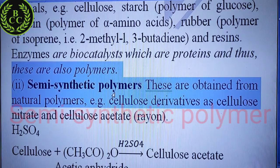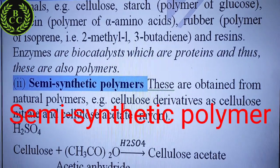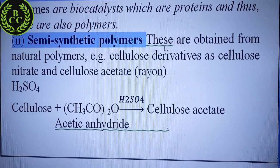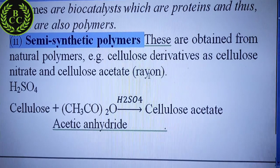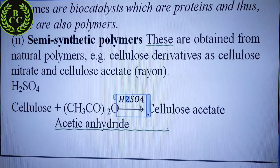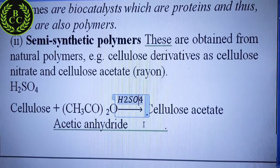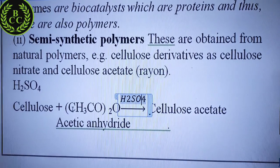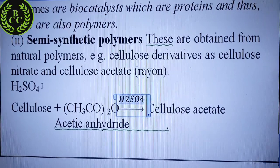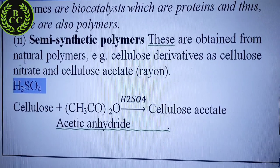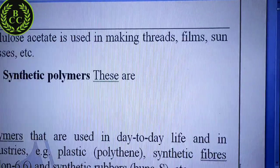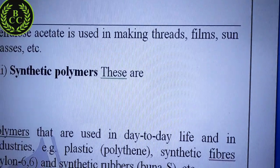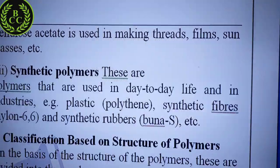The second type is semi-synthetic polymer. Semi-synthetic means it is not completely man-made — it is natural but has undergone chemical modification. These are obtained from natural polymers. For example, cellulose derivatives such as cellulose nitrate and cellulose acetate, which we call rayon. Cellulose is a natural polymer, and cellulose acetate — made in the presence of H₂SO₄ — is used in making threads, films, and sunglasses. Cellulose acetate is a semi-synthetic polymer.